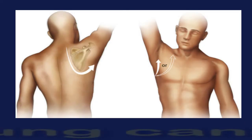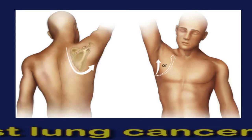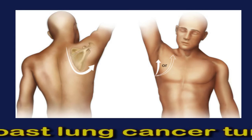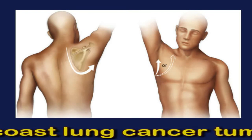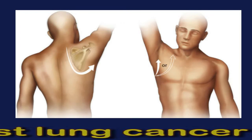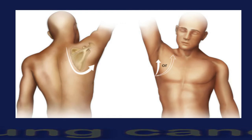Pancoast tumors are a relatively rare form of lung cancer. These tumors develop in a group called the superior sulcus at the top of the lungs. They often cause intense shoulder pain on the same side of the body as the affected lung. Some people with a Pancoast tumor may experience a group of symptoms called Horner's syndrome, which can include droopy eyelids, shrinking in one pupil, and asymmetrical changes in sweating such as reduced sweating on one side of the face.